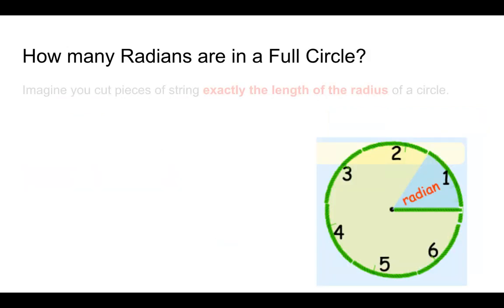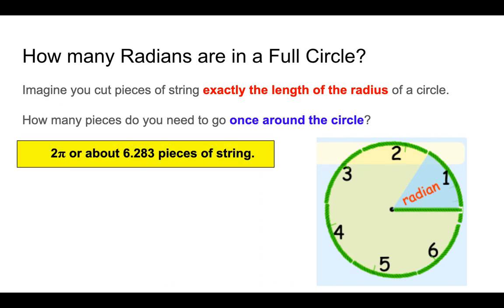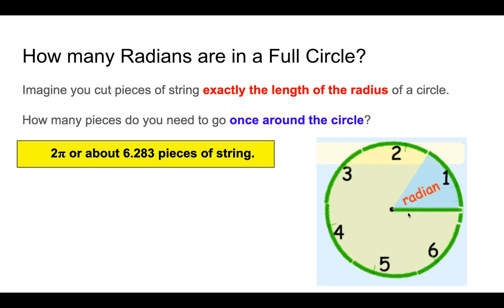How many radians are in a full circle? Imagine you cut pieces of string exactly the length of the radius of a circle. How many pieces do you need to go once around the circle? In our simulations, we saw that you need 6.283 pieces of string or about 2 pi. And in our picture here, you could see 1, 2, 3, 4, 5, 6, and a little bit to complete that full rotation. We don't know how big the radius is, but it doesn't matter. If you increase the size of the radius or decrease the size of the radius, you still have 6 of that radii of that radius length around.